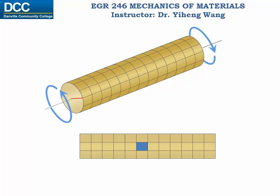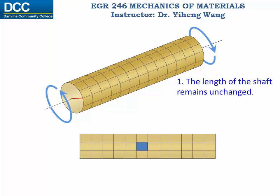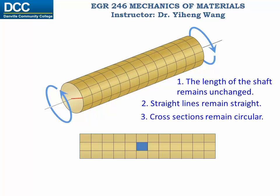Now if I apply external torques along the axial axis of this shaft, we want to know how this will deform the shaft. But first let me make several assumptions. We will assume that during the deformation the length of this shaft will remain unchanged, the straight lines drawn along the axial direction will still remain straight, and the cross sections of this shaft will remain circular.